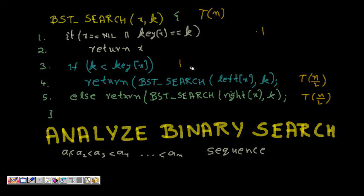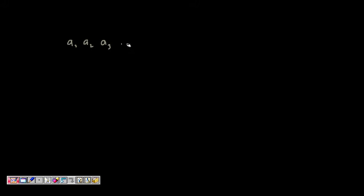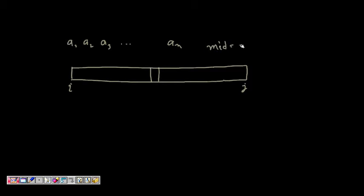The basic idea of binary search is: given an array a1, a2, a3 till a of n, we try to find the middle element. If i is the first index and j is the last index, we find mid = (i + j) / 2.